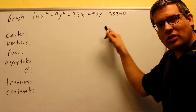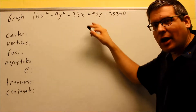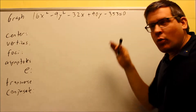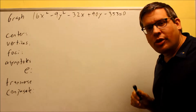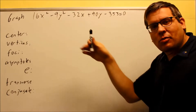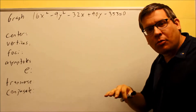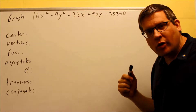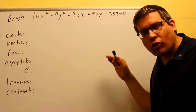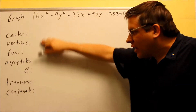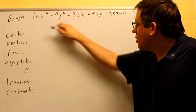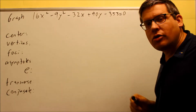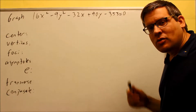We're now ready to do one of these hyperbola problems that involve completing the square. We need to have this in the proper form — some quantity squared over a number, minus another quantity squared over a number, equals 1. We have to get it in that format, and we can't answer any of this until we first do the complete the square step.